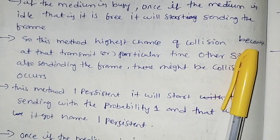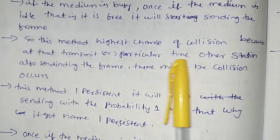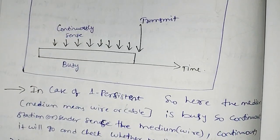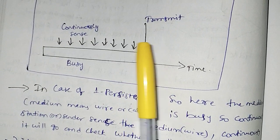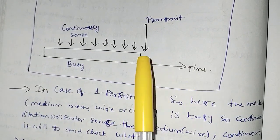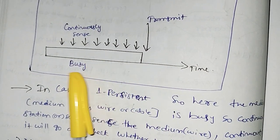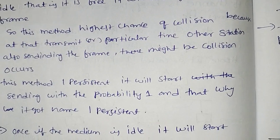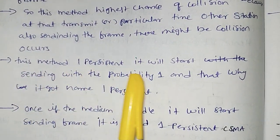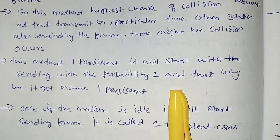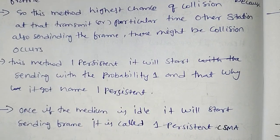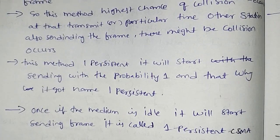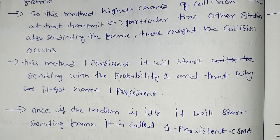This method has the highest chance of collision because at the particular time when the medium becomes idle, other stations are also waiting and will start sending frames simultaneously, which may cause a collision. This method starts sending with probability one, which is why it is named one persistent CSMA.